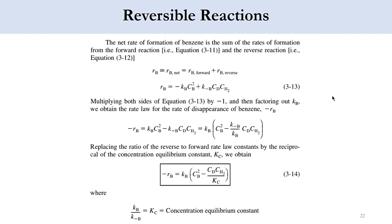The term K_{-B}/K_B is actually equal to 1/K_C, where K_C is the equilibrium constant. So the equation transforms to: -R_B = K_B · [C_B² - C_D · C_{H₂} / K_C]. Equivalently, the concentration equilibrium constant K_C = K_B / K_{-B}.